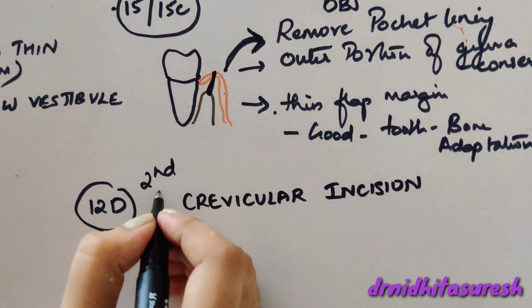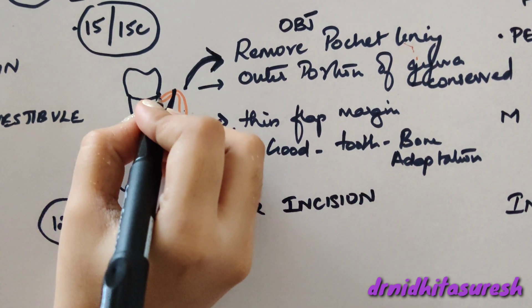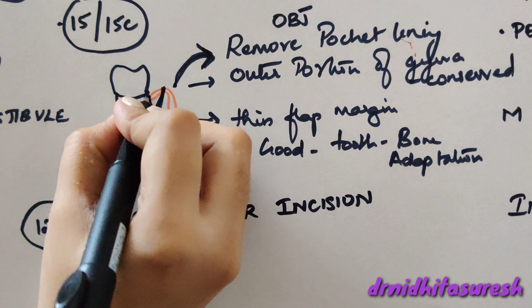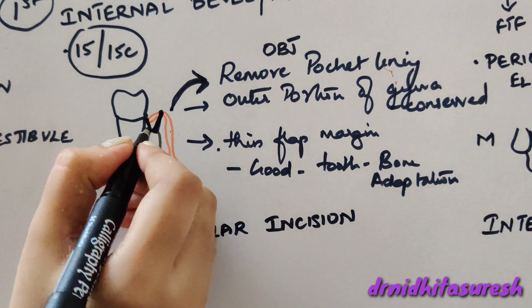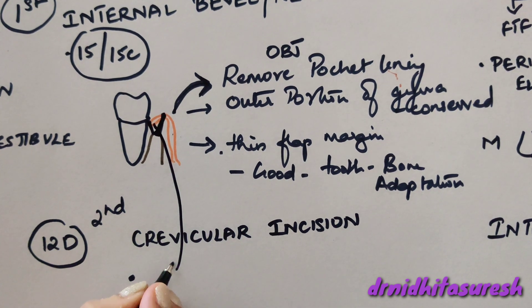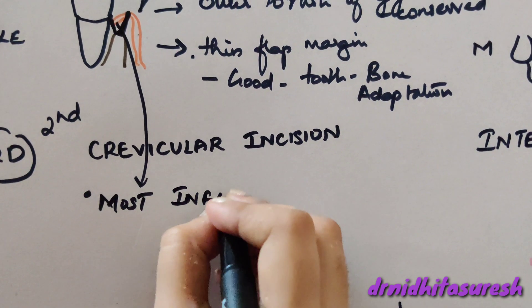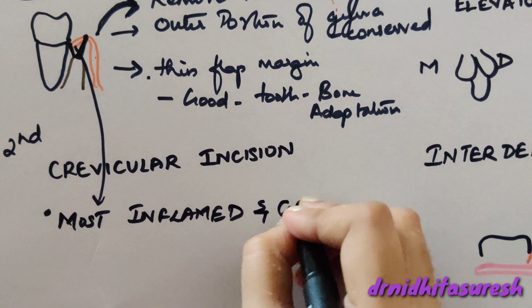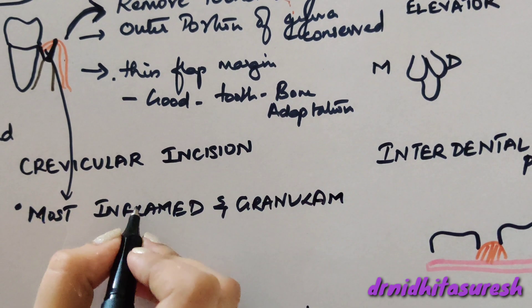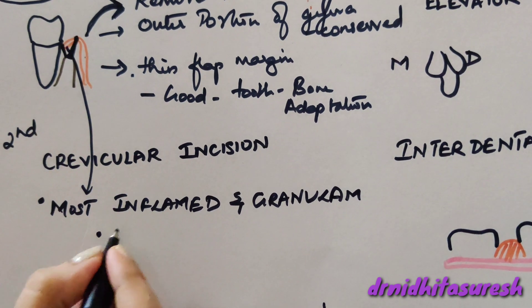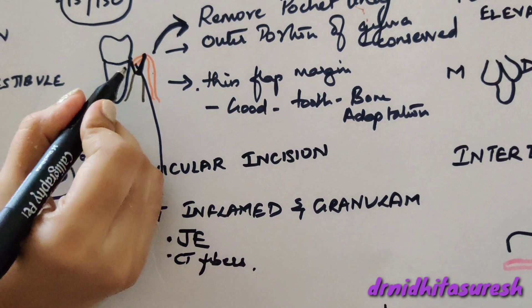Next is the crevicular incision, done by the blade 12D. Here the incision is from the gingival sulcus to the bone margin. When this incision is given, a v-shaped wedge is formed around the tooth. This v-shaped wedge will contain the most inflamed and granulomatous tissue of the lateral wall of the pocket, and will also contain junctional epithelium and connective tissue fibers.